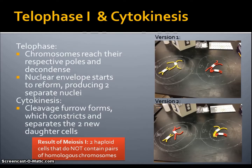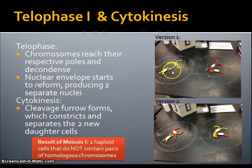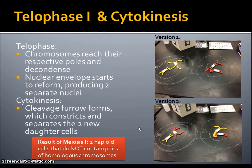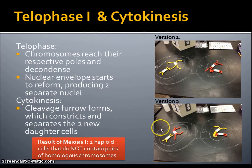The final steps in meiosis I are telophase I and cytokinesis. In telophase I, chromosomes reach their respective poles and begin to decondense, and the nuclear envelope begins to reform, producing two separate nuclei. Cytokinesis refers to when the cleavage furrow forms and constricts the cell, separating the two new daughter cells. In version 1, both paternal and maternal pairs of sister chromatids are in their own cell. In version 2, one maternal and one paternal are paired together in each cell. The result of meiosis I is two haploid cells that do not contain pairs of homologous chromosomes — only separate pairs of sister chromatids.